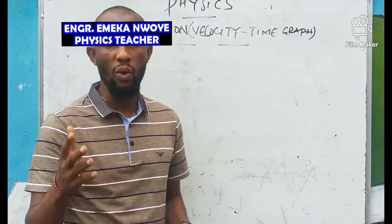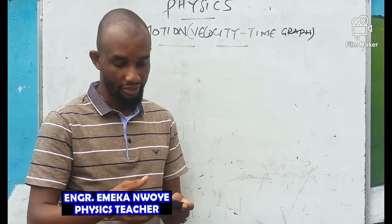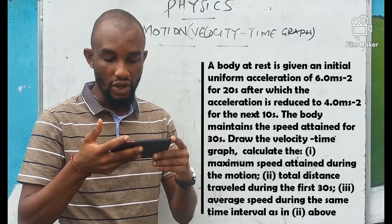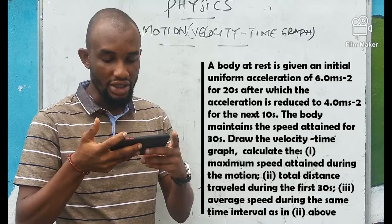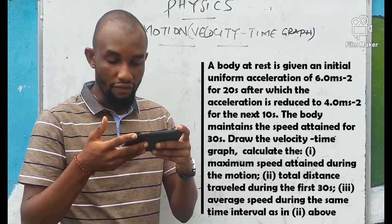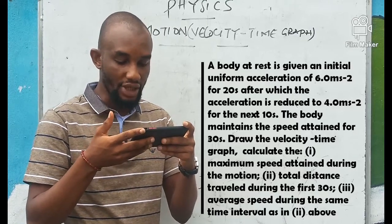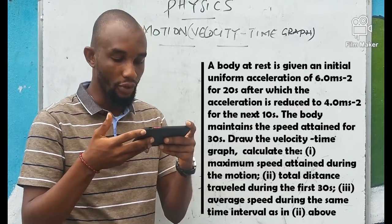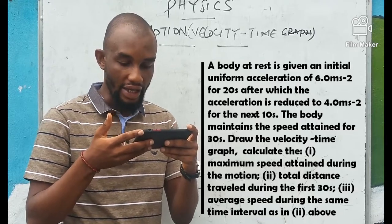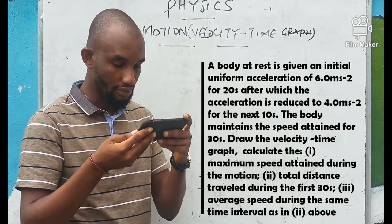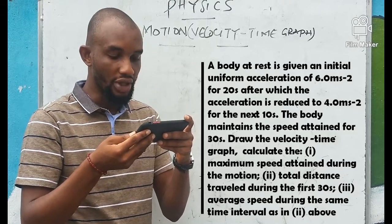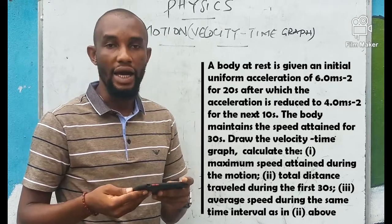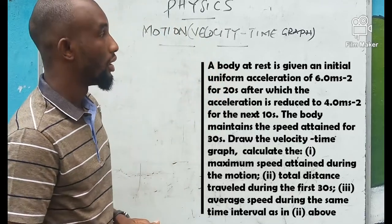Now for the next question — this is a wider question, so please listen attentively. A body at rest is given an initial uniform acceleration of 6 meters per second squared for 20 seconds, after which the acceleration is reduced to 4 meters per second squared for the next 10 seconds. The body then maintains the speed attained for 30 seconds. Draw the velocity-time graph and calculate: (i) maximum speed, (ii) total distance in the first 30 seconds, (iii) average speed for that same interval.